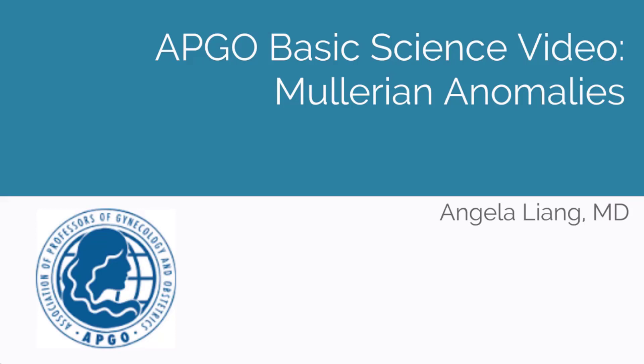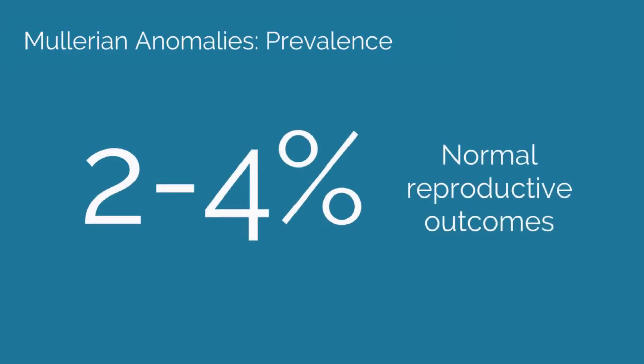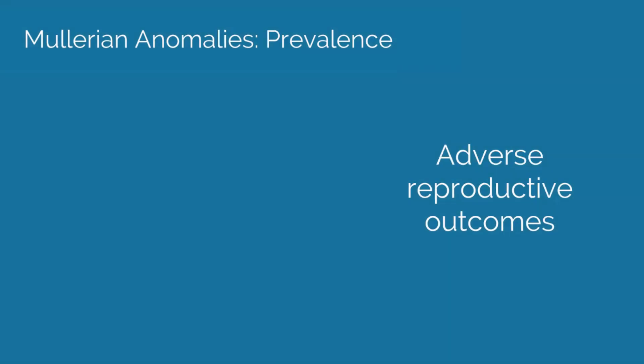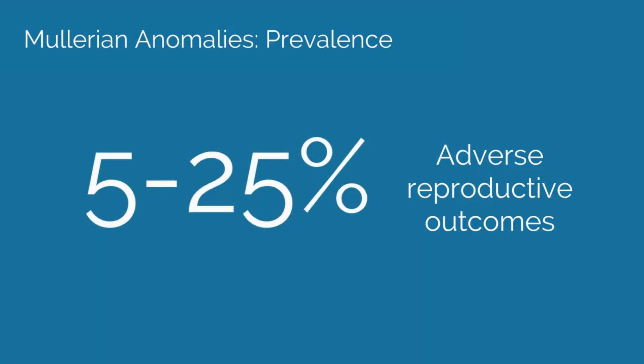APCO Basic Science Video Topic: Müllerian Anomalies. Müllerian anomalies are the incomplete or abnormal formation and/or fusion of the Müllerian or paramesonephric ducts. Congenital anomalies of the uterus affect 2-4% of women with normal reproductive outcomes. For women with adverse reproductive outcomes, Müllerian anomalies occur at greater prevalence, from 5-25% of women. The true incidence can be difficult to determine since many women with uterine anomalies are often asymptomatic and as a result go unrecognized.